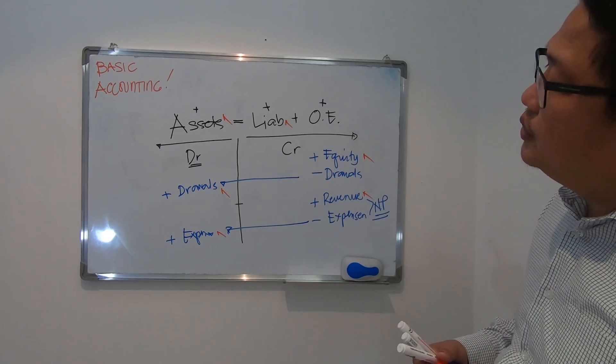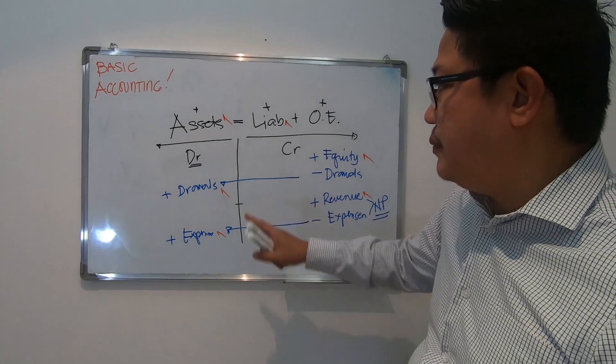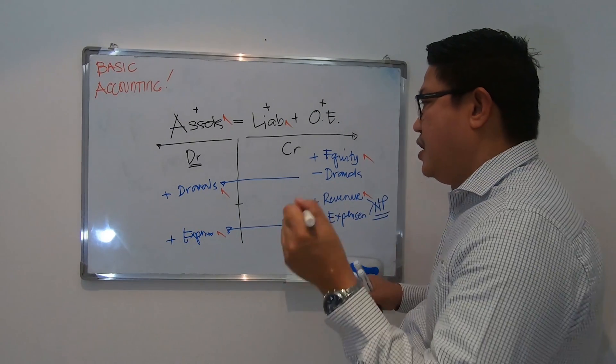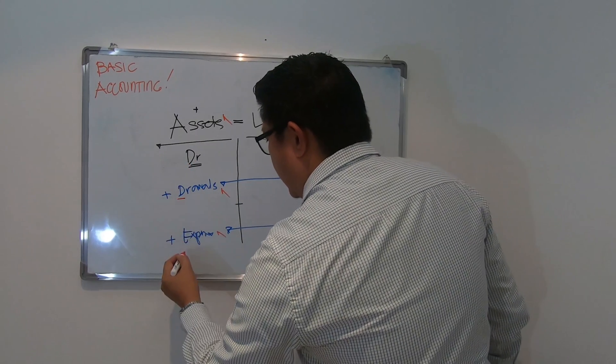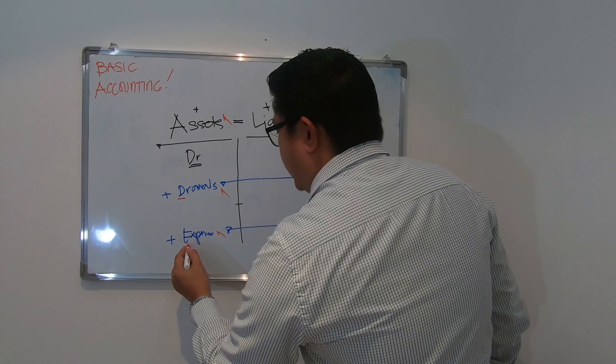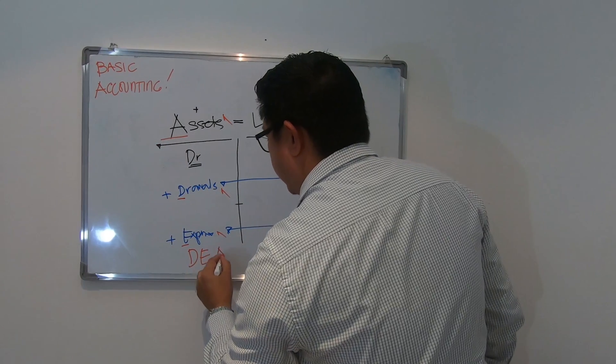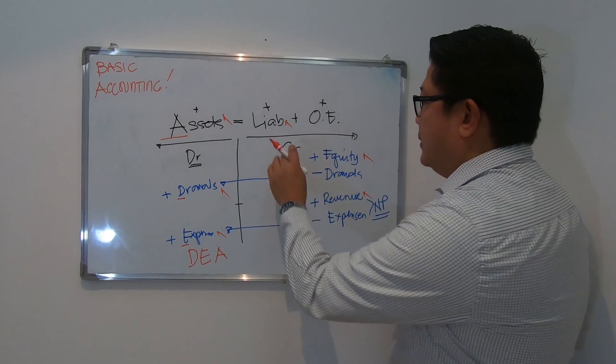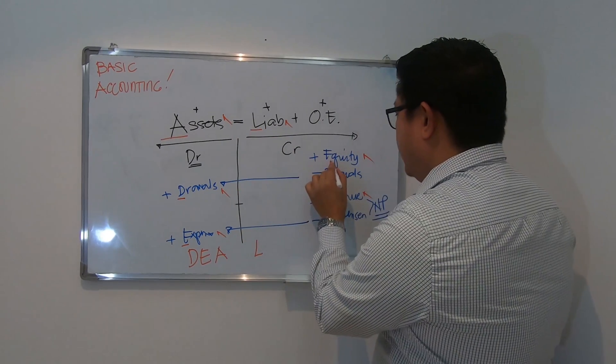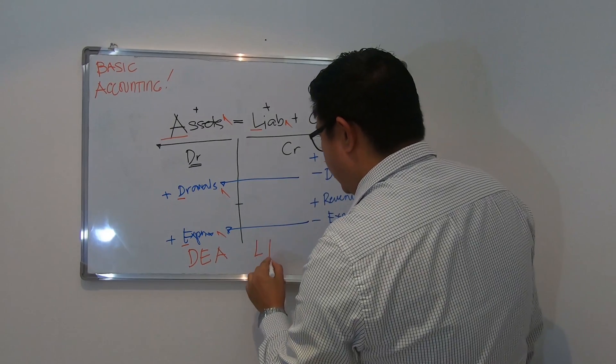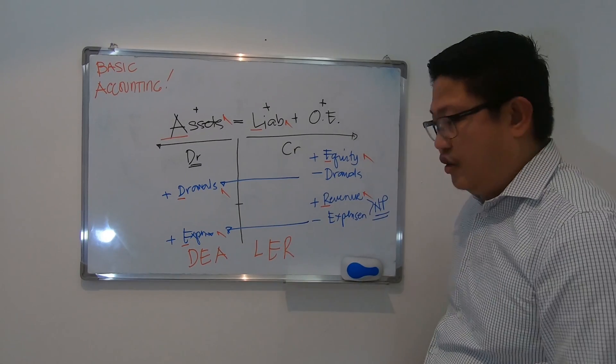So for you to easily remember the concept of debit and credit, we will use some acronyms or names. On the debit side, we have to use letter D for drawals, and E for the expenses, and A for the assets. Now on this side, on the credit side, we have letter L for liabilities, we have E for equity, and R for revenue. Let's read this. We have DEALER.